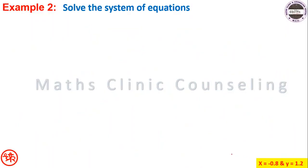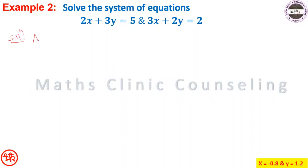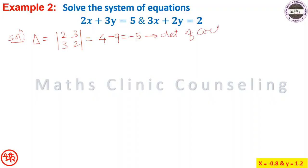Second example: solve the system of equations 2x plus 3y equal to 5, and 3x plus 2y equal to 2. Solution: delta equals the determinant [2, 3; 3, 2], which equals 4 minus 9, equal to minus 5. This is the determinant of coefficients of x and y.